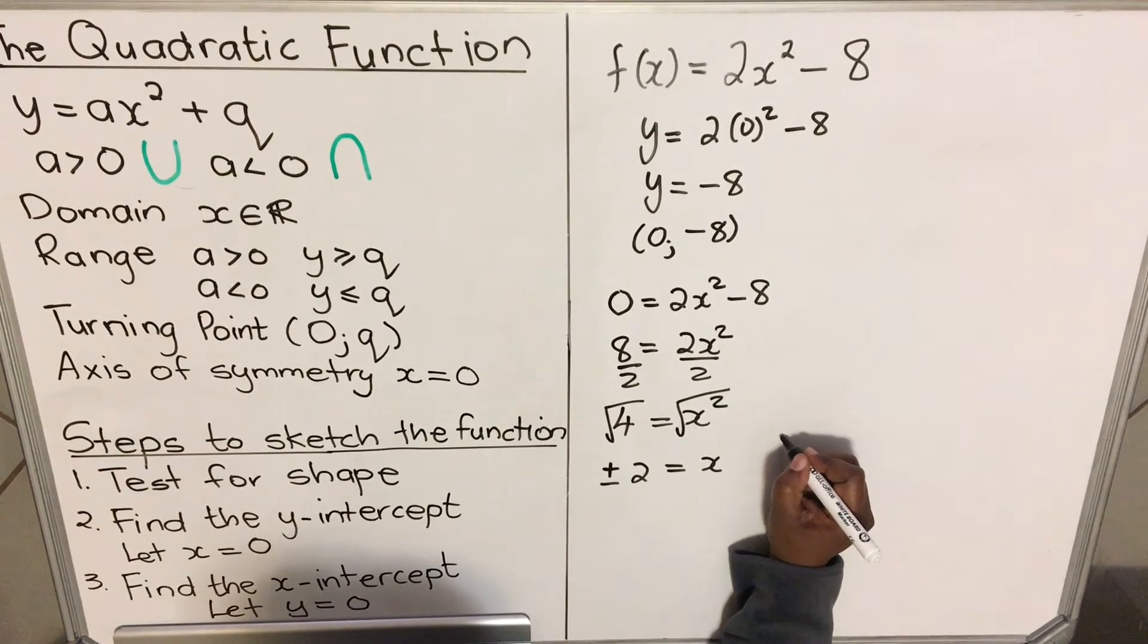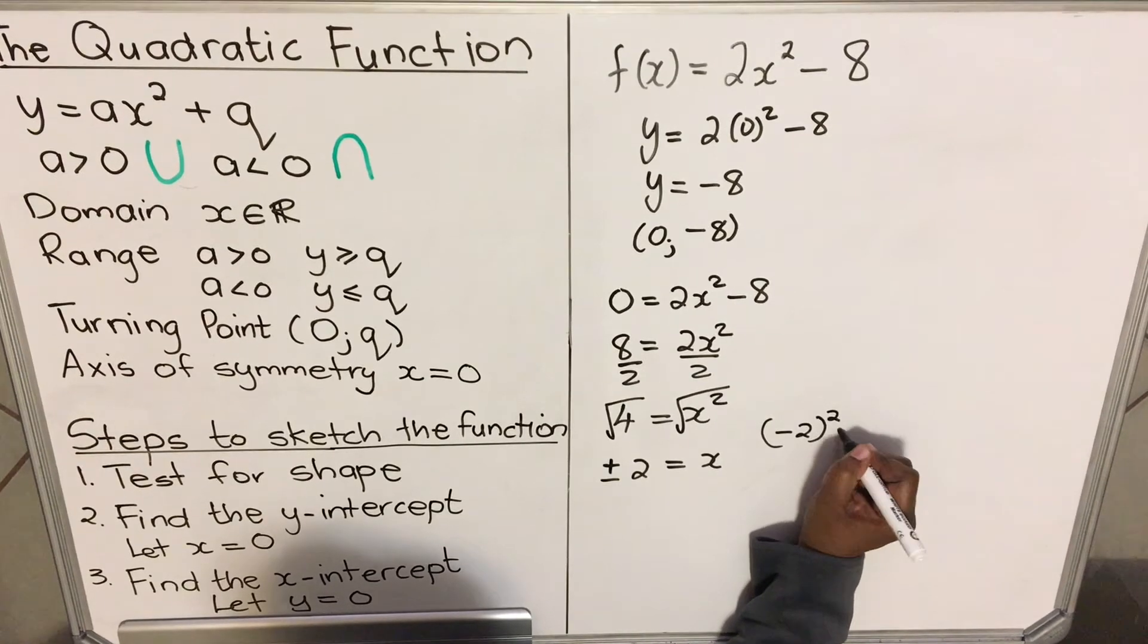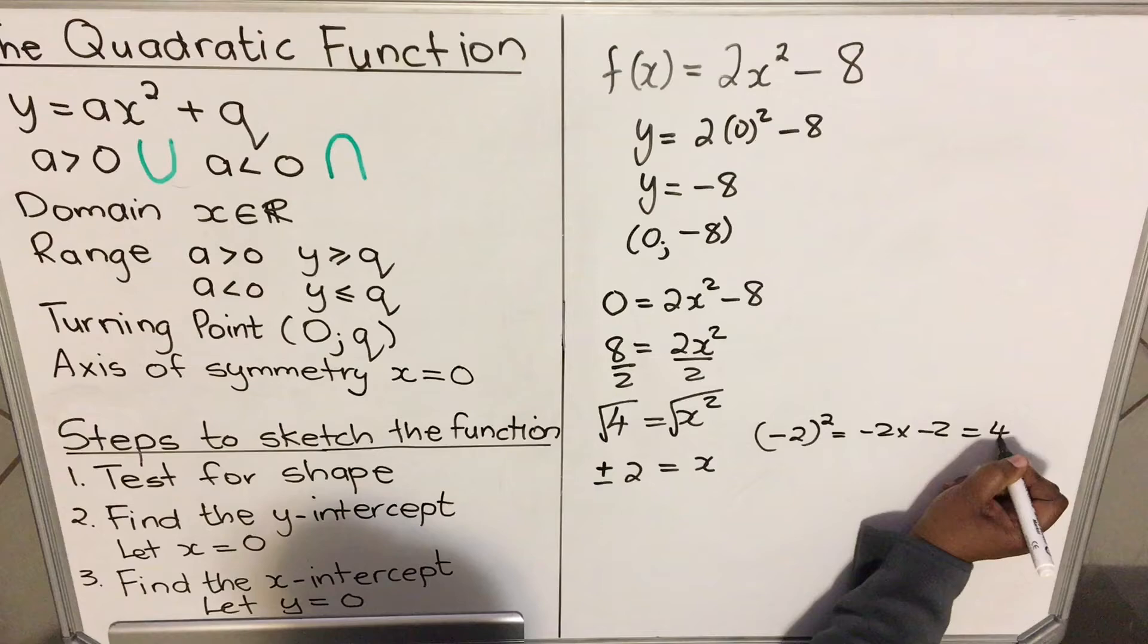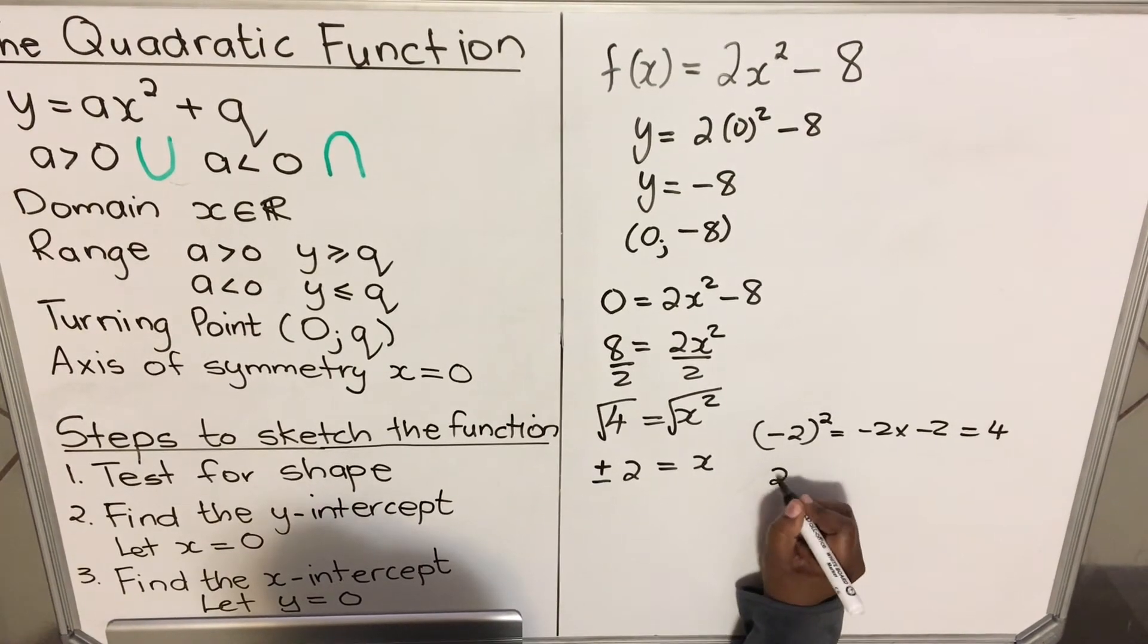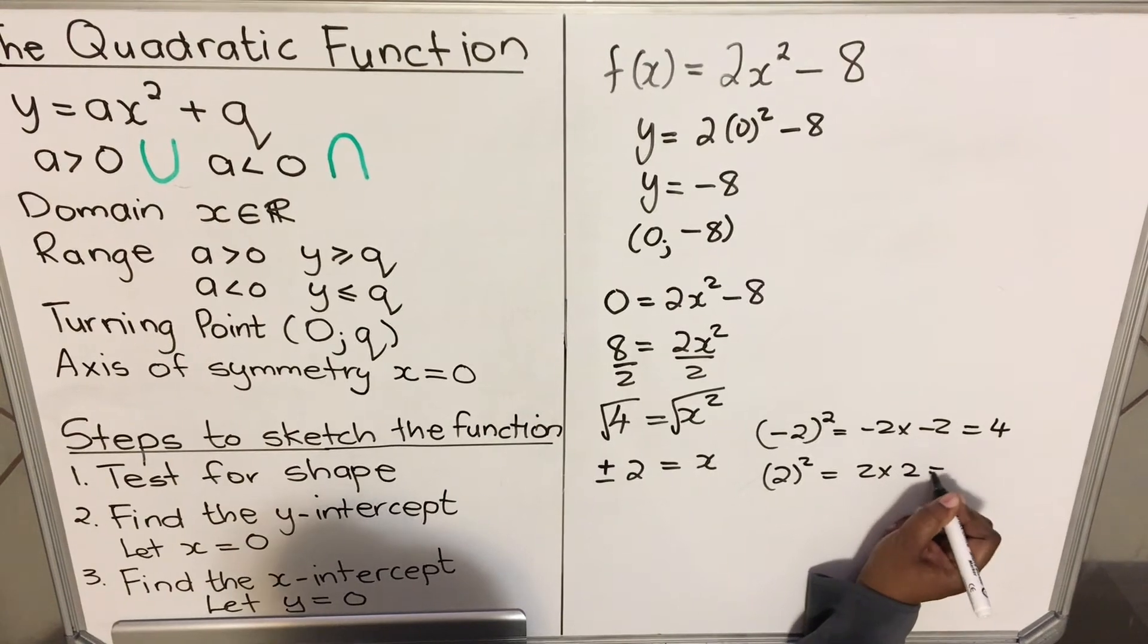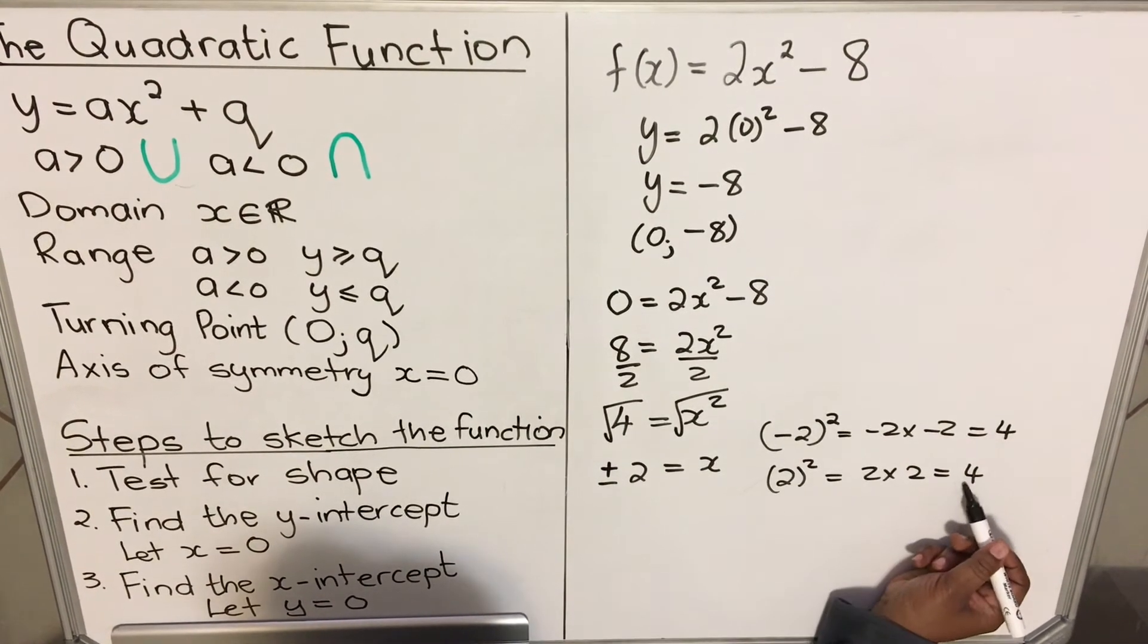When you have minus 2 squared, which means minus 2 times minus 2, your answer is positive 4. When you have 2 squared, which means 2 times 2, your answer is 4. So when you put a square root, square root of 4, it's both numbers.